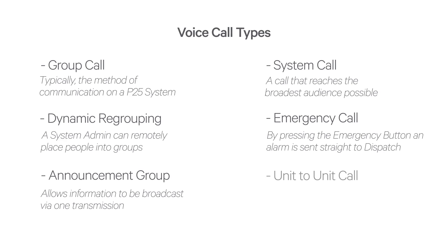A unit-to-unit call allows a person to individually call another person or console and communicate privately. The unit ID of the person you're calling must be entered into your radio before pressing the PTT to initiate this type of call. Typically, the receiving radio will show the calling party's ID on the display and issue a ringing alert tone so that they can then choose to take the call or not.